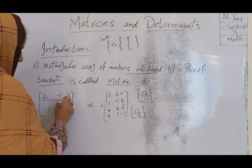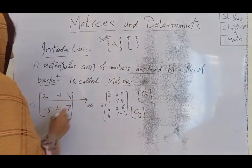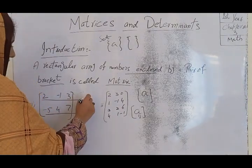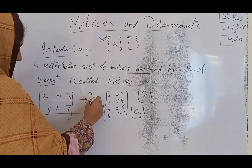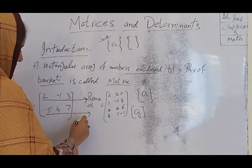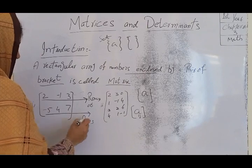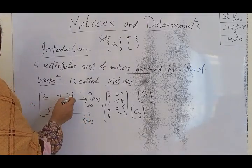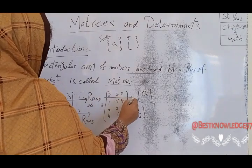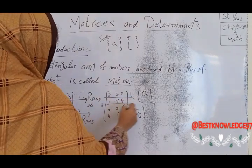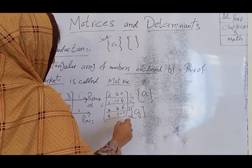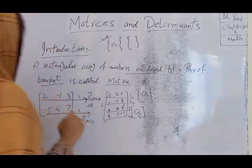A matrix has horizontal lines called rows. For example, this is row number 1, this is row number 2, this is row number 3, and this is row number 4.